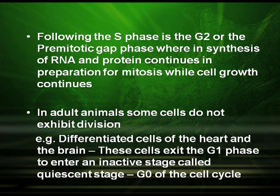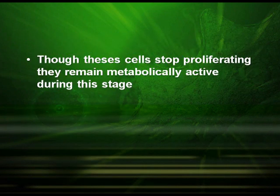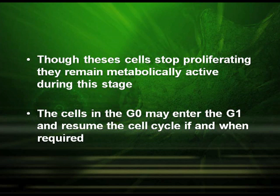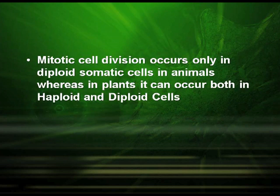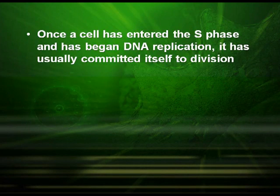These cells exit the G1 phase to enter an inactive stage called the quiescent stage G0 of the cell cycle. These cells stop proliferating but remain metabolically active during this stage. The cells in G0 may re-enter G1 and resume the cell cycle if and when required. Mitotic cell division occurs only in diploid somatic cells in animals, whereas in plants it can occur both in haploid and diploid cells. Once a cell has entered the S phase and has begun DNA replication, it has usually committed itself to division.